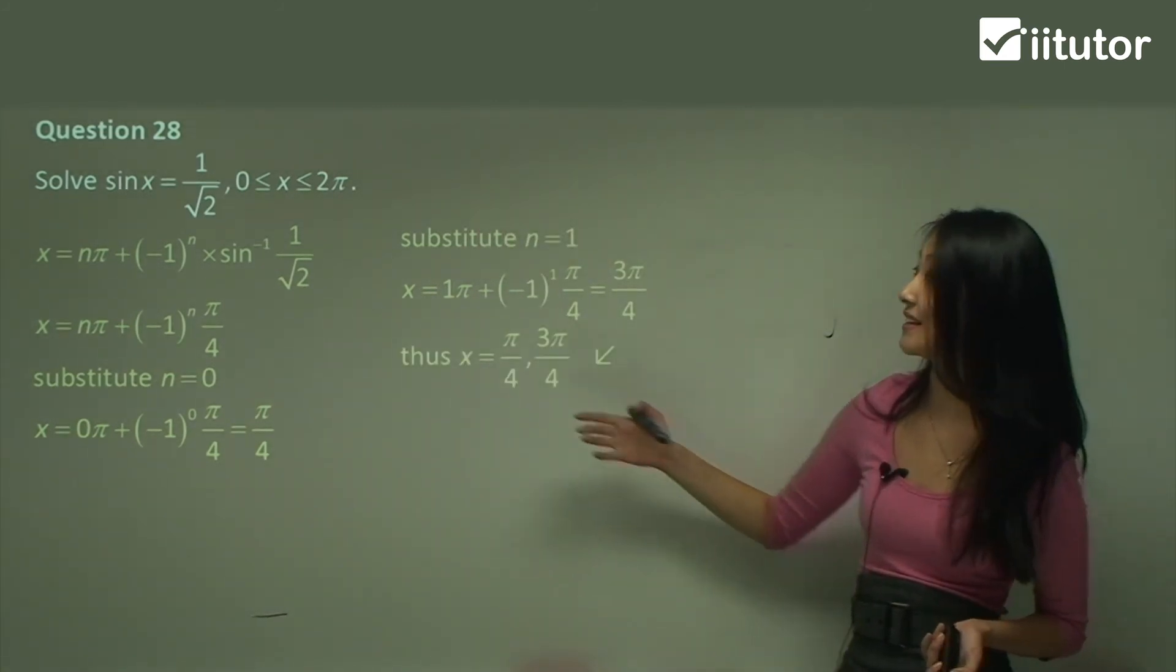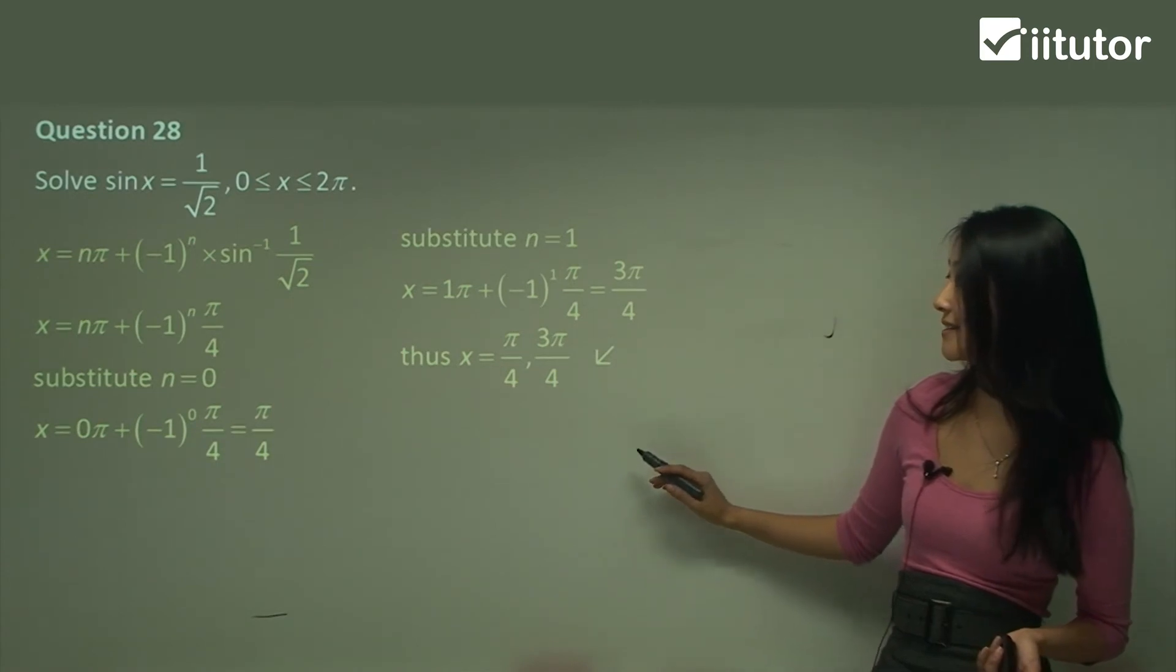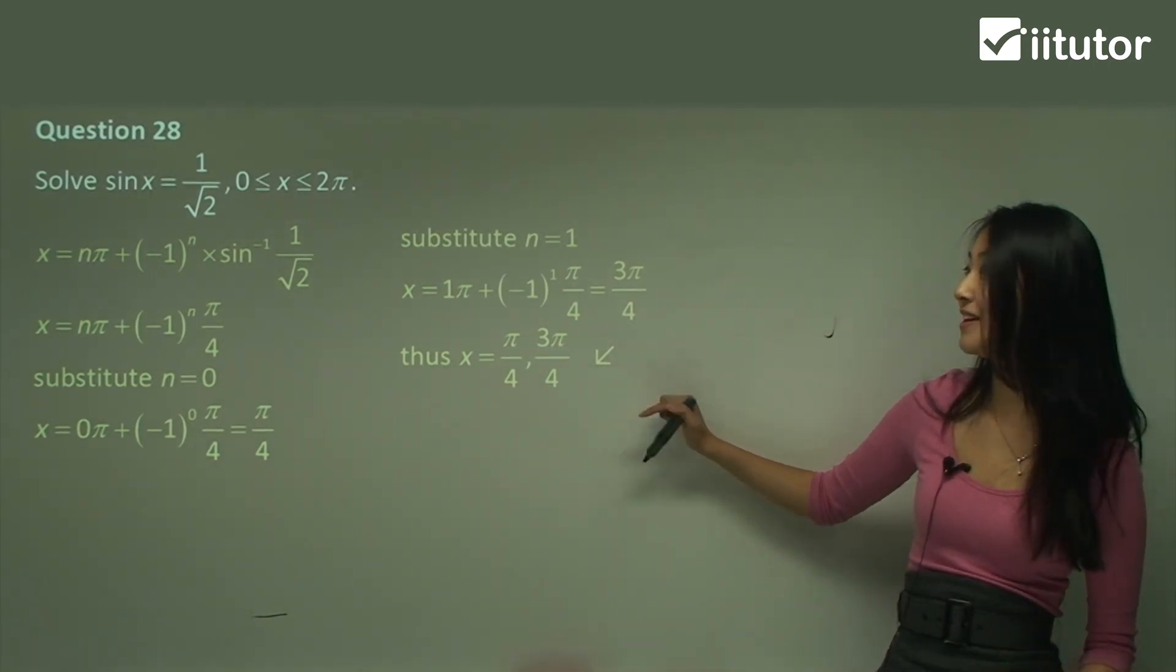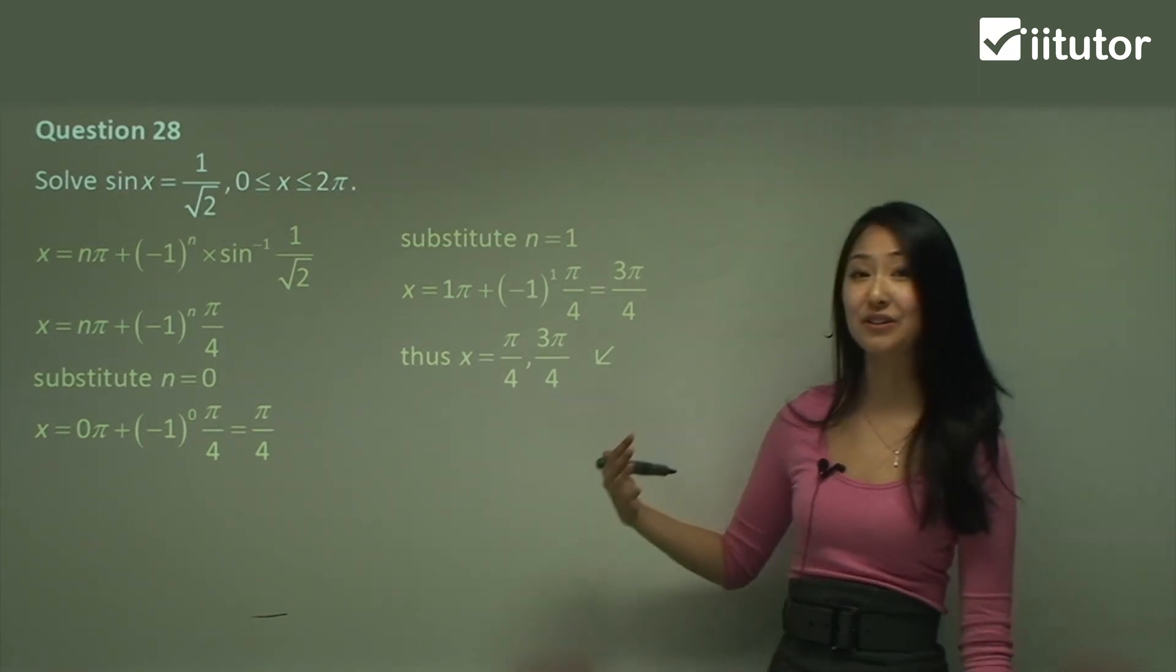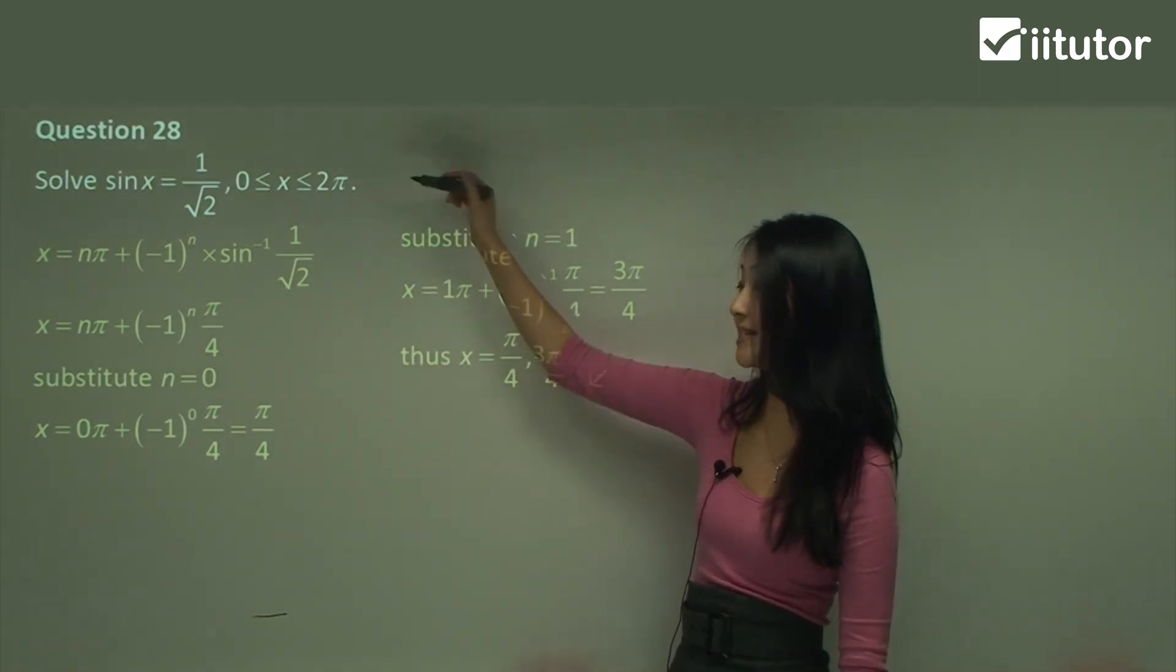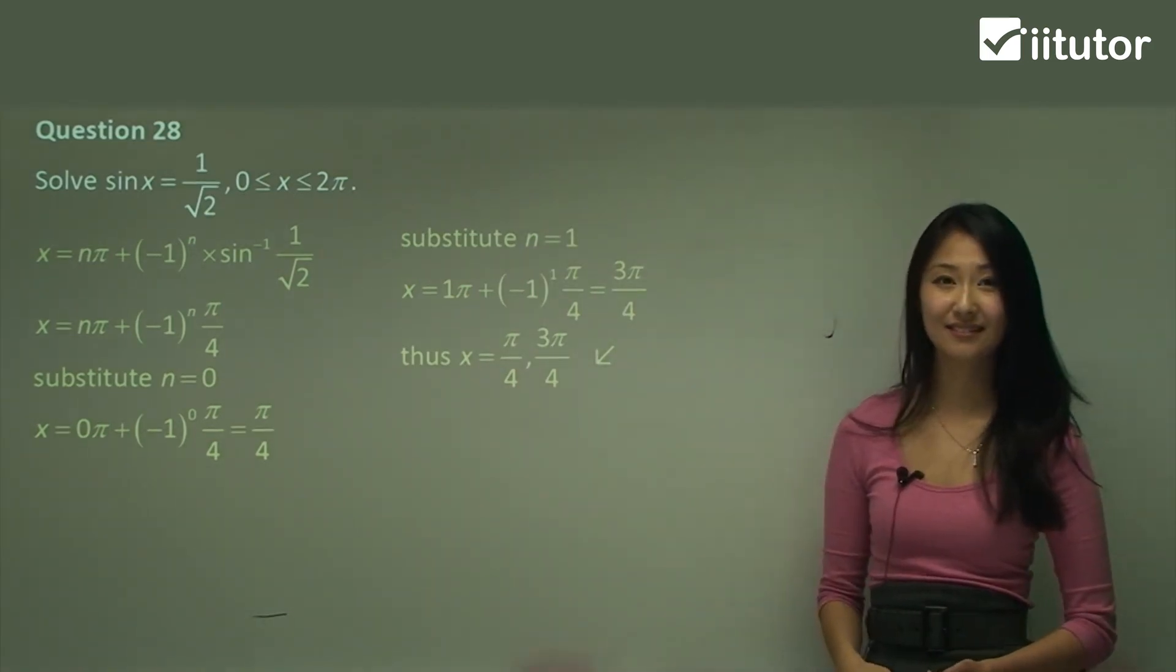So therefore we've worked out using the general formula that x equals to pi on 4 and 3 pi on 4 as well. So this is an example of how we can use a general formula to work out a question even when it does have a specified domain.